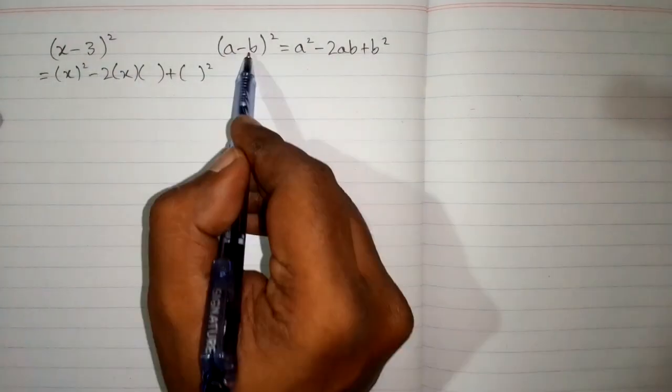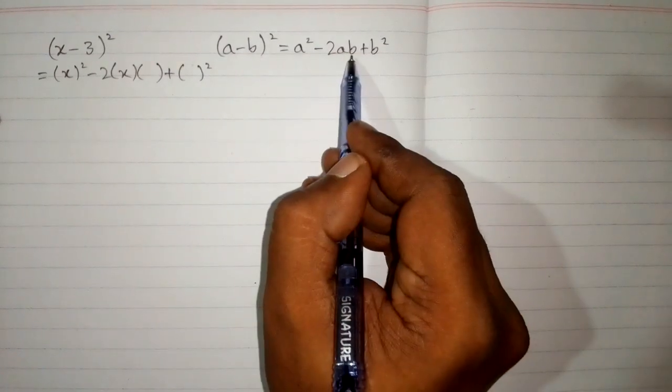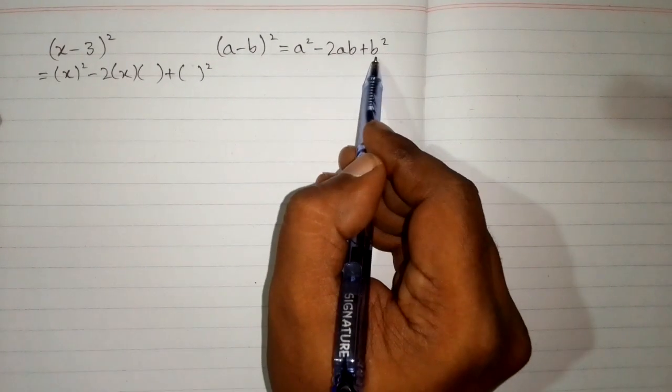And then minus sign 1. And then we have 3 in place of this b. So we will put 3 over here and over here.